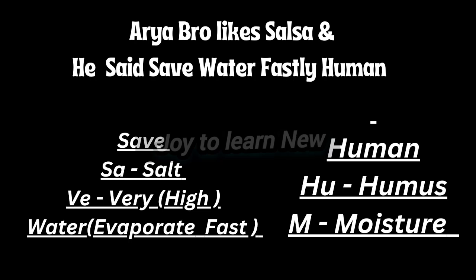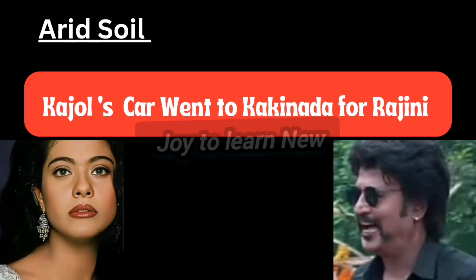Now take the word 'human': HU stands for humus, and M stands for moisture. The soil lacks humus and moisture. To repeat: salt content is very high, salt is obtained by evaporating water, and the soil lacks humus and moisture content.